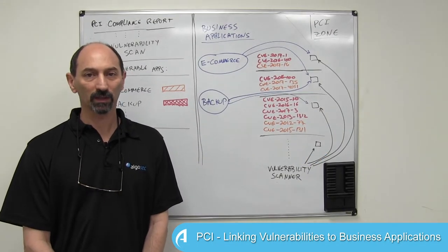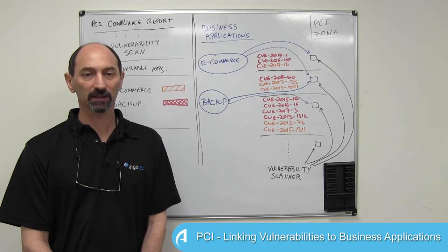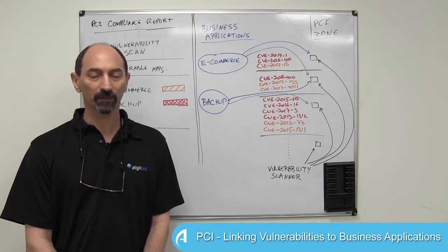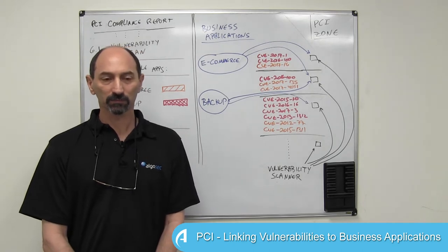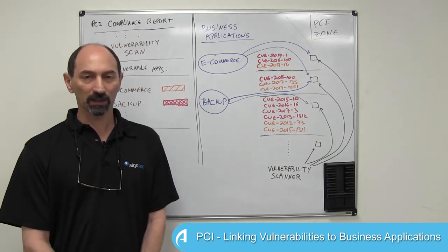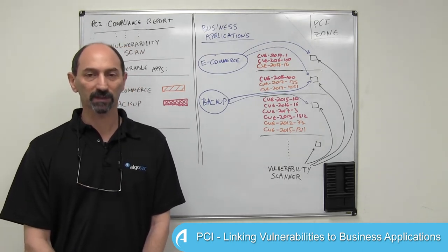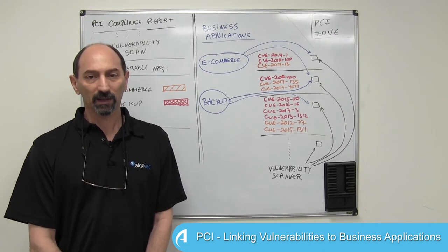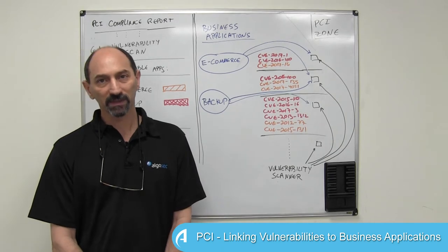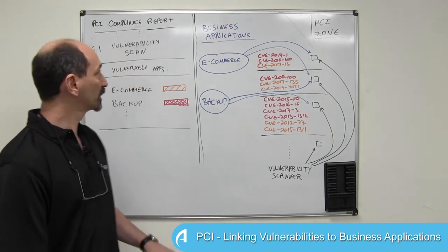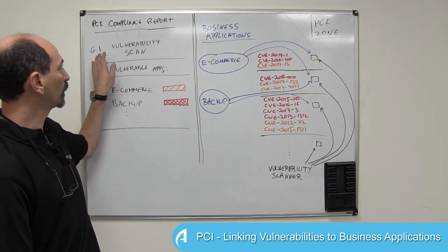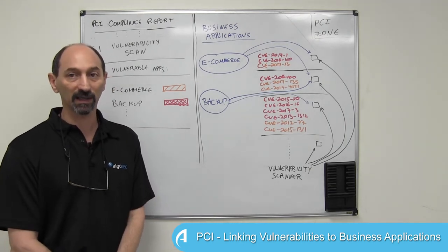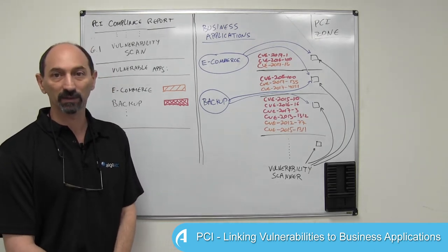Hello, I'm Professor Wohl and today I'll be discussing PCI and how to link vulnerabilities to business applications. If you're running any kind of operation that involves credit card processing, you are subject to PCI. One of the requirements is PCI requirement 6.1, which basically requires you to run a vulnerability scan on the systems you have in the PCI zone.